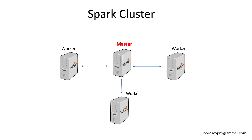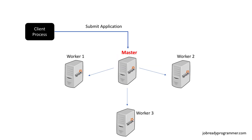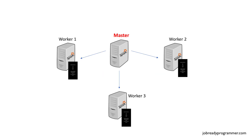The master node's primary responsibility is to ensure that workers are up and running. If the worker application crashes, the master can restart it. All the work gets done by workers — workers are the ones that execute your Spark code. The first step to have a Spark application run on a cluster is to submit the code to the master node. Typically, this is done by packaging up our code into a jar file and submitting it to the master node.